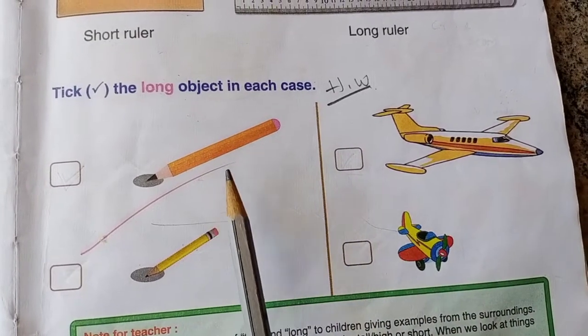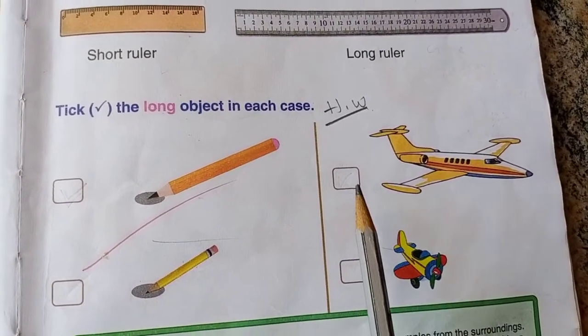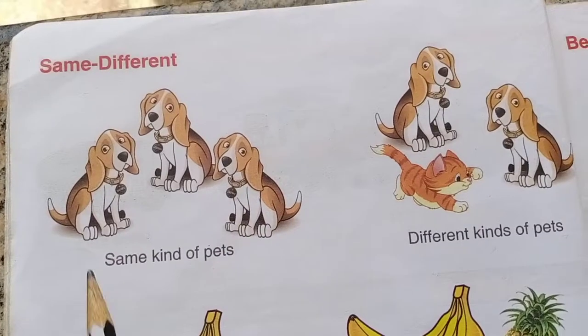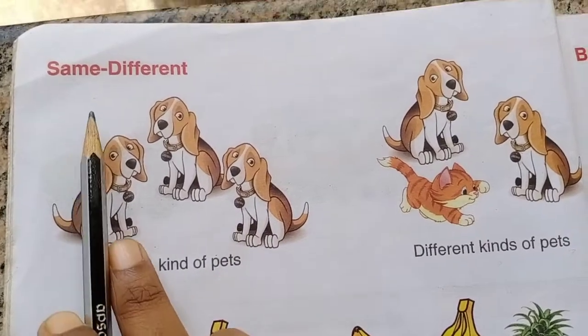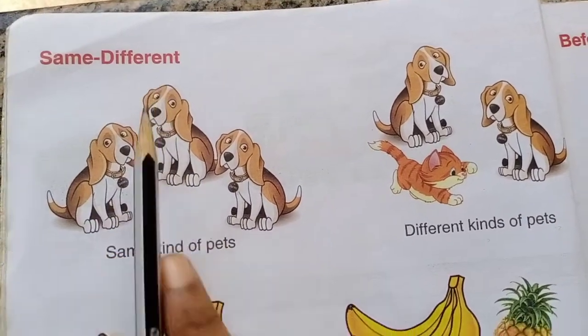This is your homework — you have to find the long object and tick mark it. The next topic is same and different.